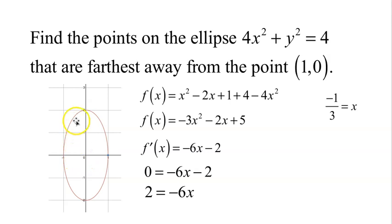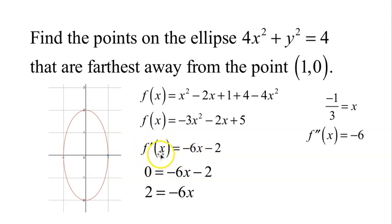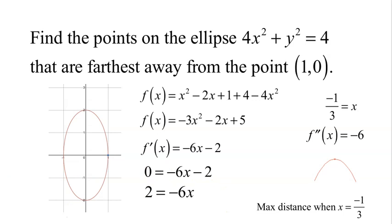So x equals negative 1/3, and there are two points on the ellipse where x is negative 1/3 — one above and one below. That seems reasonable as the points with the greatest distance from (1, 0). To confirm it's a maximum, I'll use the second derivative test. If f'(x) is negative 6x minus 2, the second derivative is negative 6. Negative 6 means concave down, so the distance is indeed maximized when x equals negative 1/3.